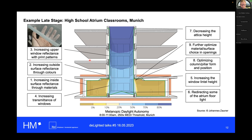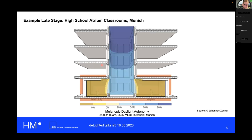Mostly this is a game of material choices. One I find particularly interesting: we decided to print a pattern on the upper floor windows to increase the amount of light that comes down to the lower classrooms — at the expense of those upper rooms. But those upper rooms are not classrooms; they are traffic areas that are closer to the opening. This really changed a lot, even though it's a very expensive measure.